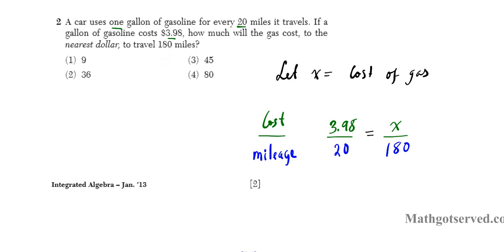So there we have a proportion. If I solve it for x, it's basically going to tell me how much it's going to cost to travel 180 miles. But one thing you want to note also is that we are working to the nearest dollar. So we can round this up. Instead of $3.98, if we round this to the nearest dollar, the tenth place is 5 or greater, so we can round up. So we have 4 over 20 equals x over 180.